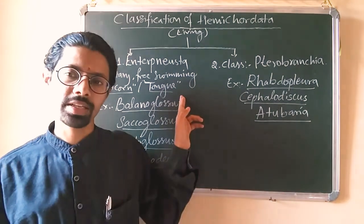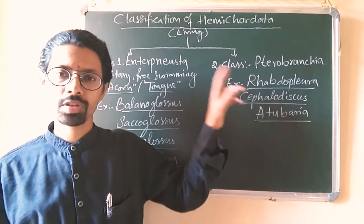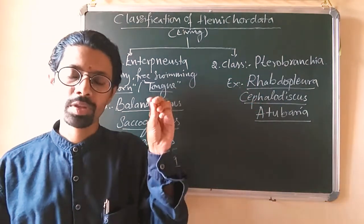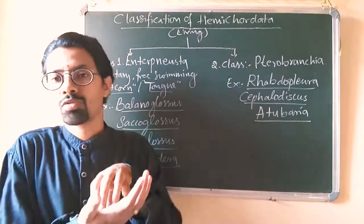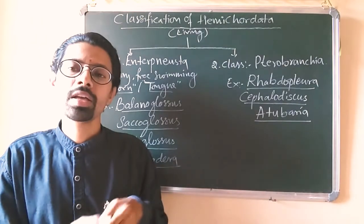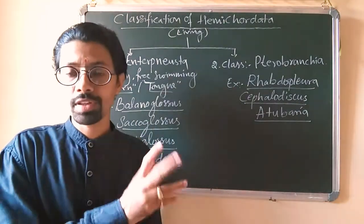Whereas in Pterobranchia, the collar, proboscis, collar, and trunk are there. They have a stalk also. The stalk helps in attaching the body to the substratum for attachment. They have a stalk and they have ciliary arms in the collar region. This is a difference between them.